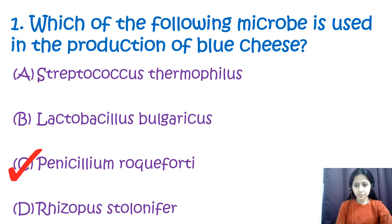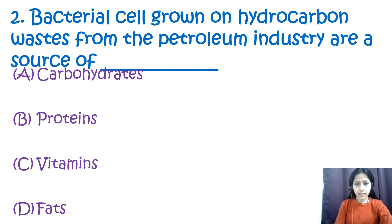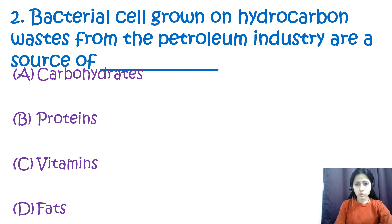Question number two: bacterial cells grown on hydrocarbon waste from the petroleum industry are a source of option A: carbohydrates, option B: proteins, option C: vitamins, and option D: fats. The bacterial cells grown on hydrocarbons from industrial wastes or byproducts are a source of proteins — option B.